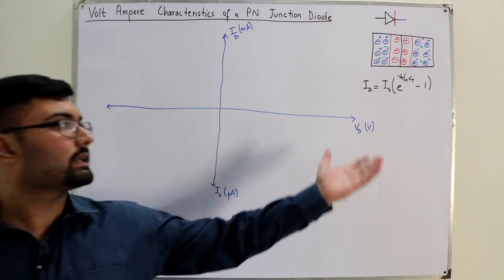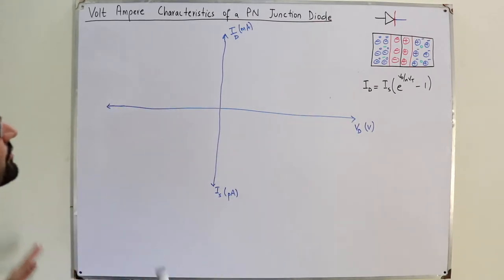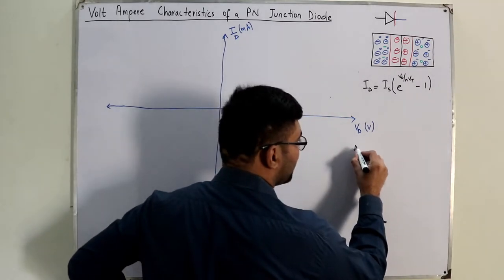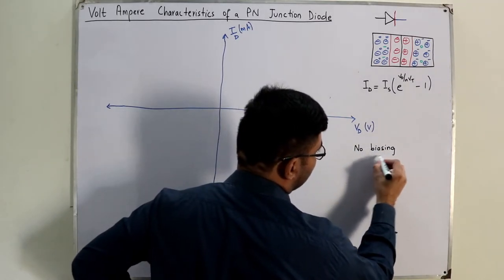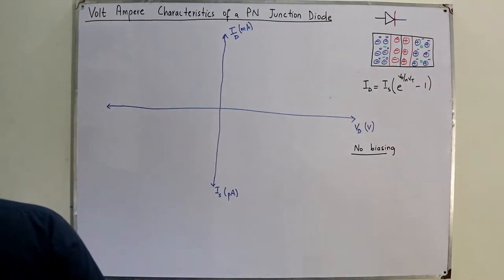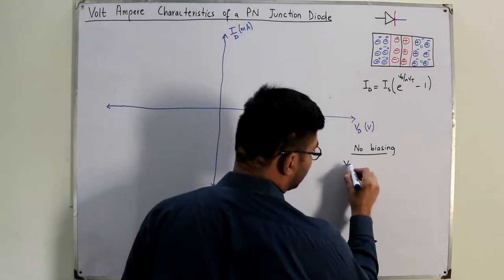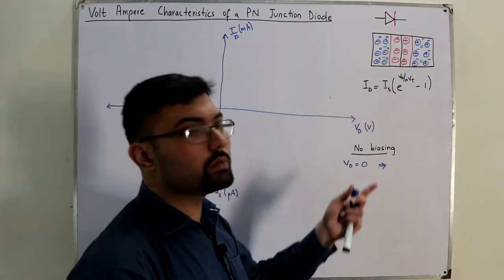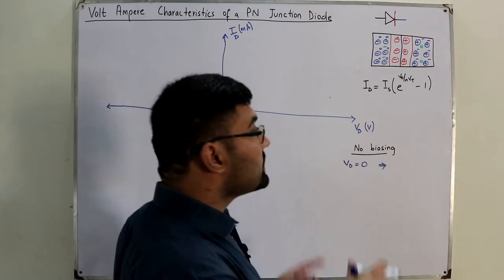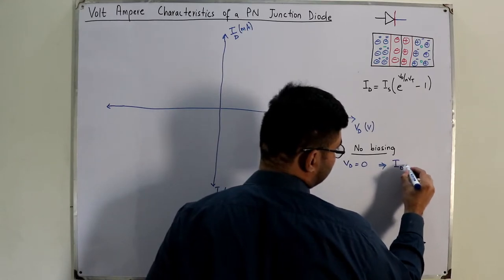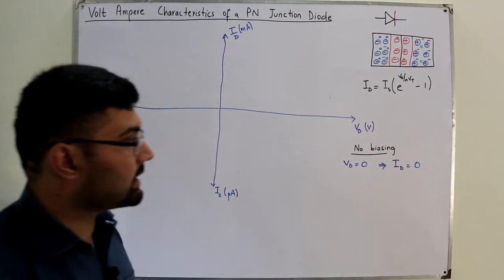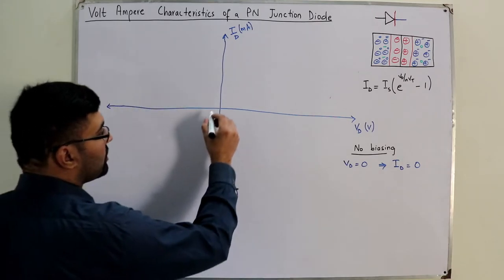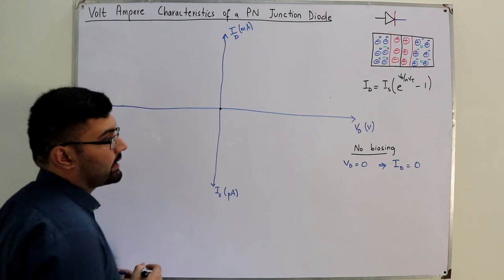First, the no-biasing condition. No biasing implies Vd = 0. If Vd becomes 0, exponential to the power 0 is 1, and 1 minus 1 is 0 — so theoretically no current flows: Id = 0. Although we do have a reverse leakage current in practice, from the mathematical formula we get no current in the no-bias condition.